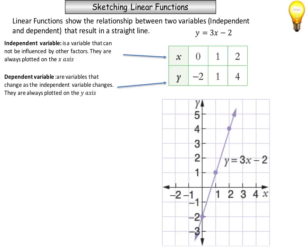Dependent variables are variables that change as the independent variable changes, and they're always plotted on the y-axis. In the case of the science experiment, the dependent variable is the temperature of the water, because you had the Bunsen burner underneath the beaker. The temperature changed because of how long you had that heat underneath. If you had taken that heat away, it would have cooled down.